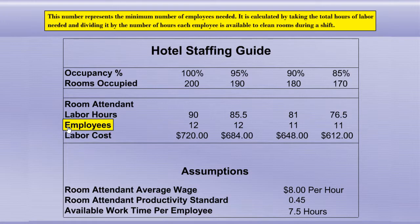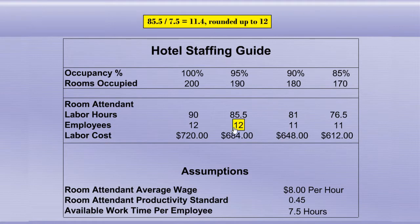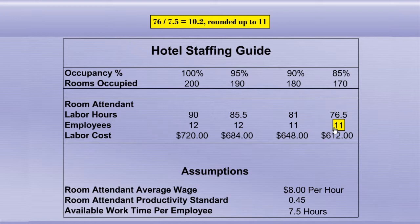This number represents the minimum number of employees needed. It's calculated by taking the total hours of labor needed and dividing it by the number of hours each employee is available to clean rooms during a shift. 90 divided by 7.5 equals 12. 85.5 divided by 7.5 equals 11.4, rounded up to 12. 81 divided by 7.5 equals 10.8, rounded up to 11. 76.5 divided by 7.5 equals 10.2, rounded up to 11.